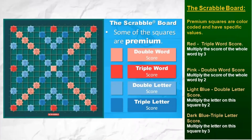Now here we have the Scrabble board. Premium squares are color-coded and have specific values. Red is triple word score — multiply the score of the whole word by 3. Pink is double word score — multiply the score of the whole word by 2. Light blue is double letter score — multiply the letter on this square by 2. And dark blue is triple letter score — multiply the letter on this square by 3.